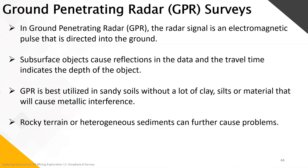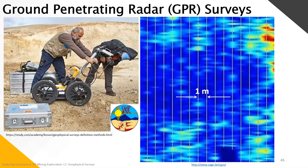Moving on to GPR or ground-penetrating radar surveys. This radar signal is an electromagnetic pulse directed into the ground. Subsurface objects cause reflections in the data and the travel time indicates the depth of the object. GPR is best utilized in sandy soils without a lot of clay, silts, or material causing metallic interference. In rocky terrain or heterogeneous sediments it can cause further problems. Here is an example of a ground survey in mainly uniform sand, using the instrument on a systematic grid — every one meter — with measurements transformed into an imagery map.